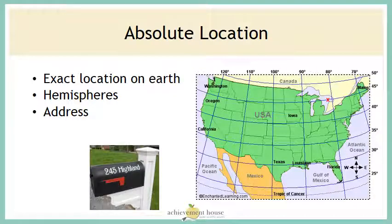Absolute location is the exact location on Earth where you can locate something. You can identify absolute location with longitude and latitude lines. You can say what hemisphere the location is in, or even the exact address. So your house address is an absolute location because it tells us exactly where you are — what street and what house number.